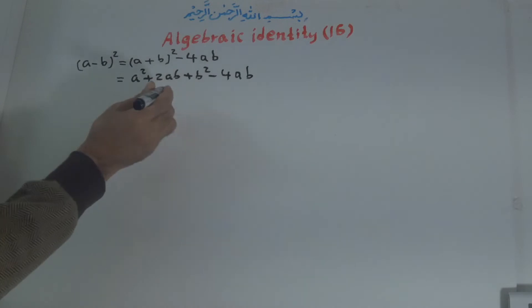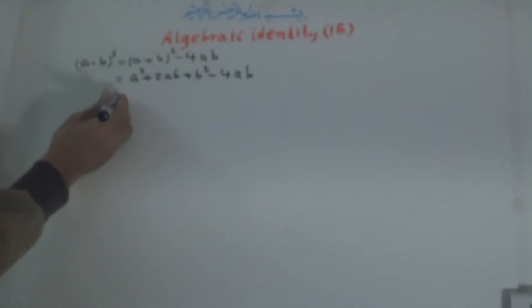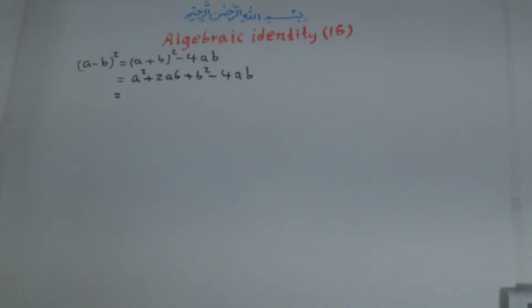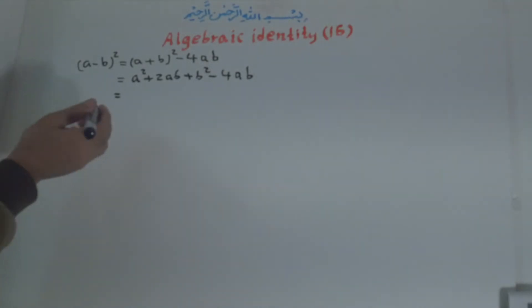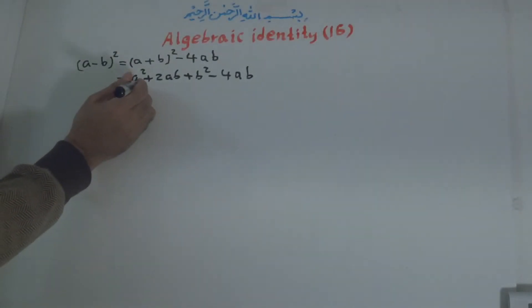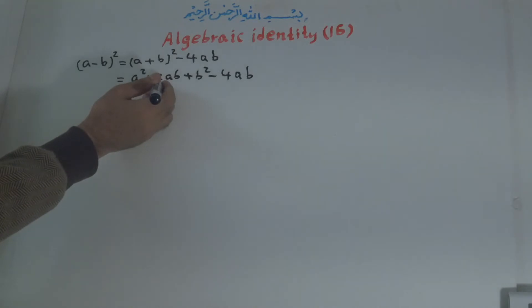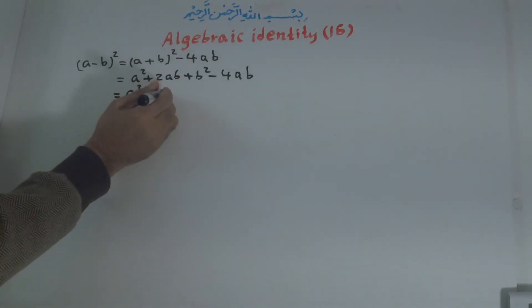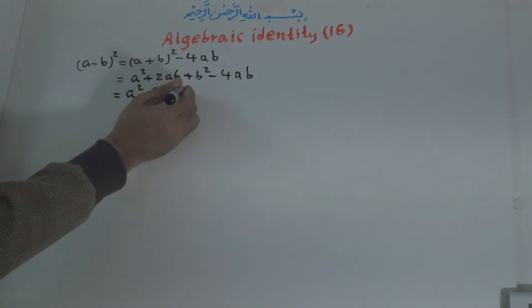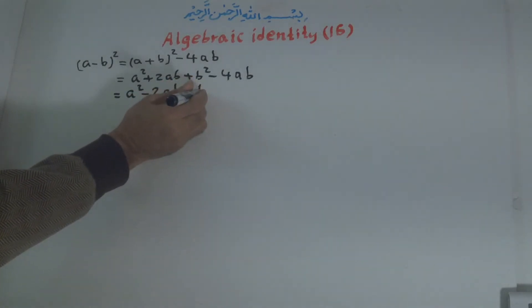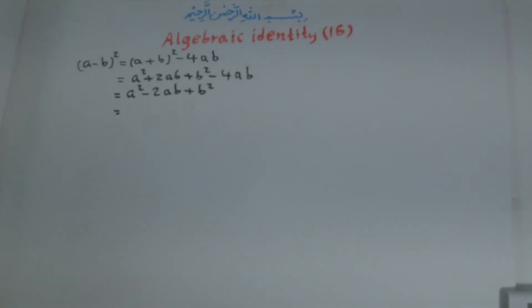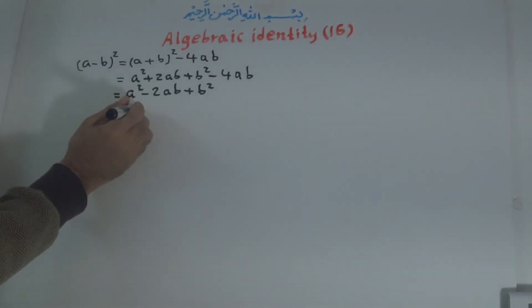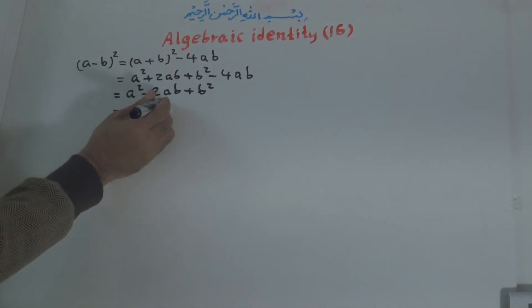Now we simplify this expression by adding the algebraic like terms. Positive 2ab and negative 4ab combine to give negative 2ab, so we get a² - 2ab + b². According to Identity number 2, a² - 2ab + b² becomes (a - b)².